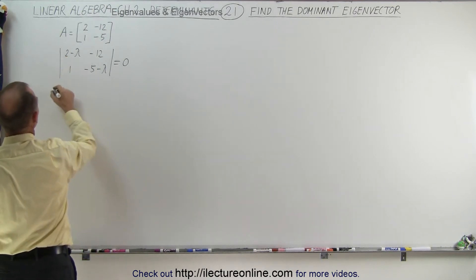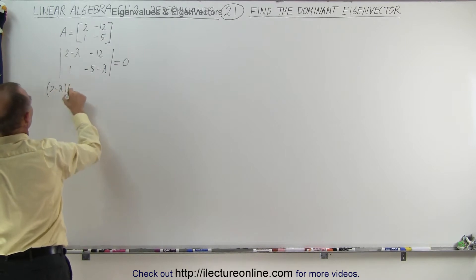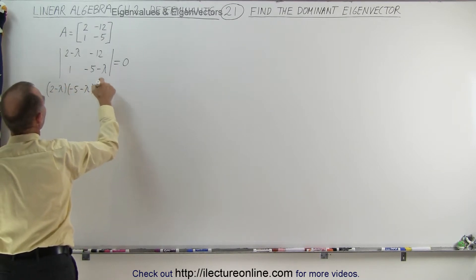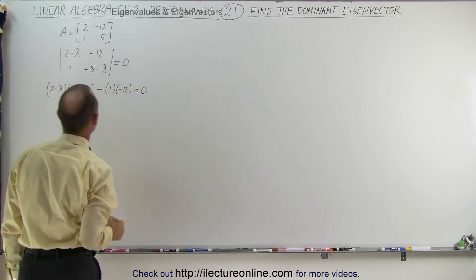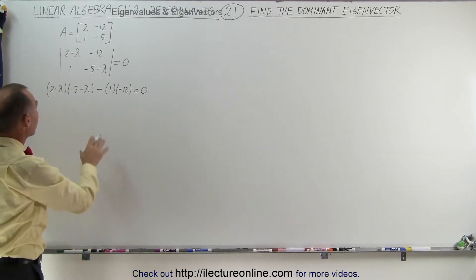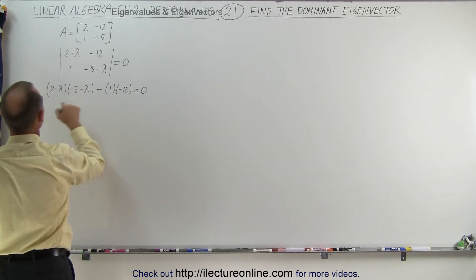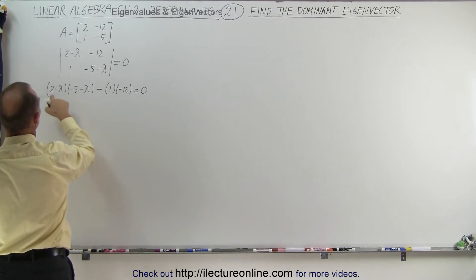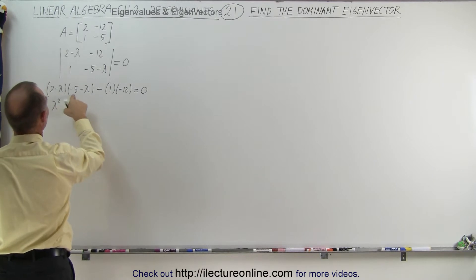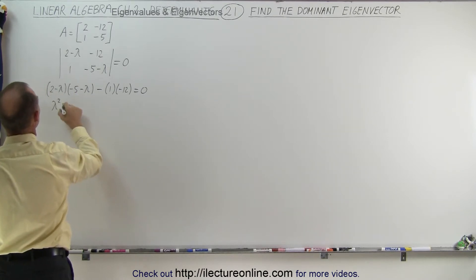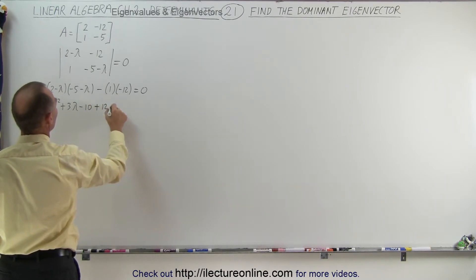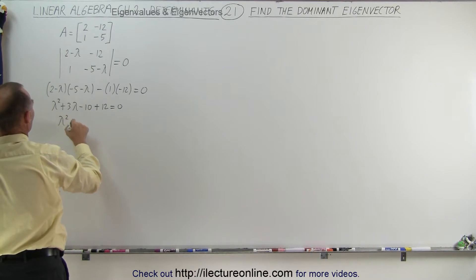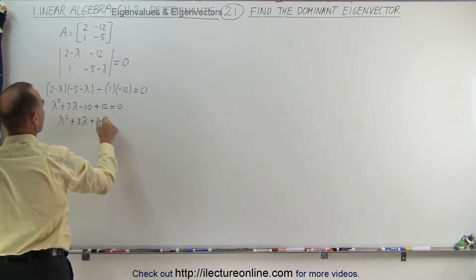We cross multiply: (2 minus lambda)(minus 5 minus lambda) minus the product of 1 and minus 12, set equal to 0. This gives us a quadratic equation. Multiplying out: lambda squared, plus 5 lambda minus 2 lambda gives plus 3 lambda, and 2 times minus 5 is minus 10, plus 12 equals 0, so lambda squared plus 3 lambda plus 2 equals 0.